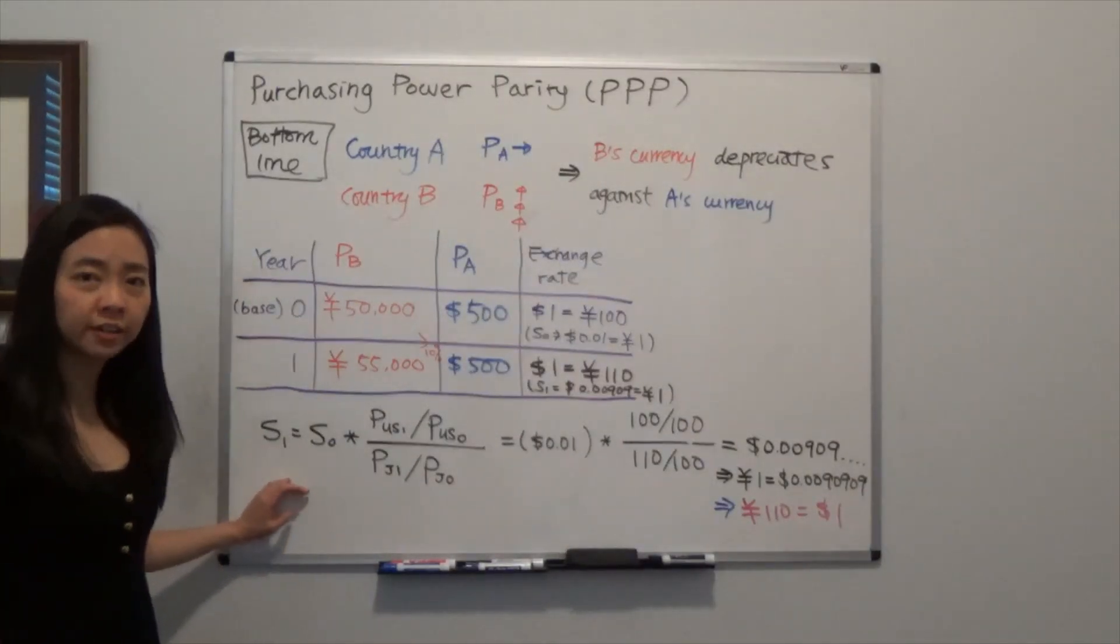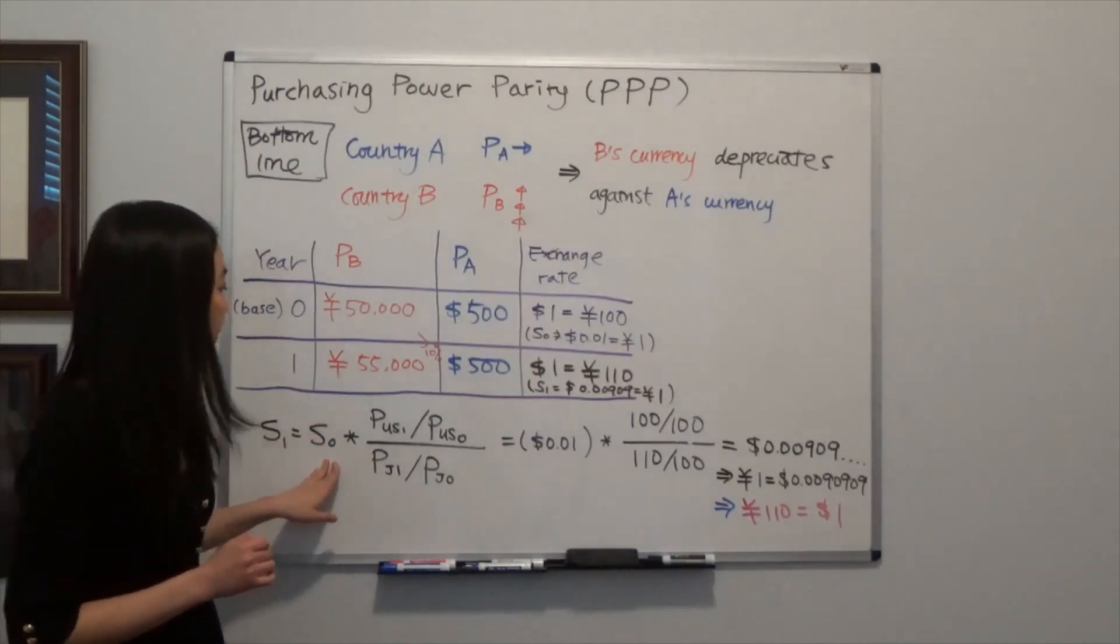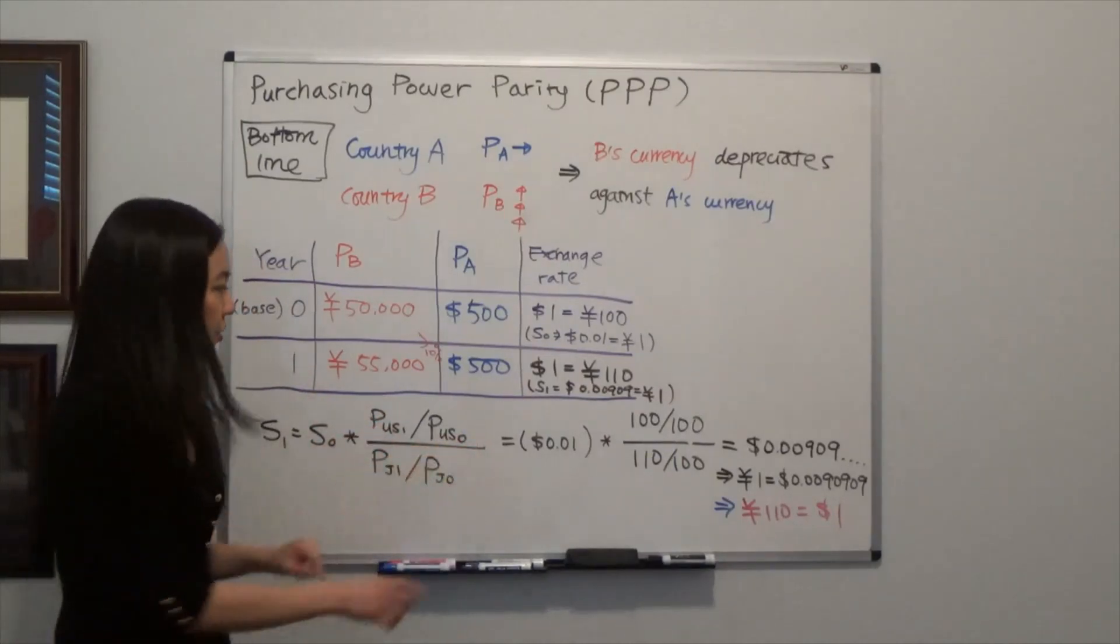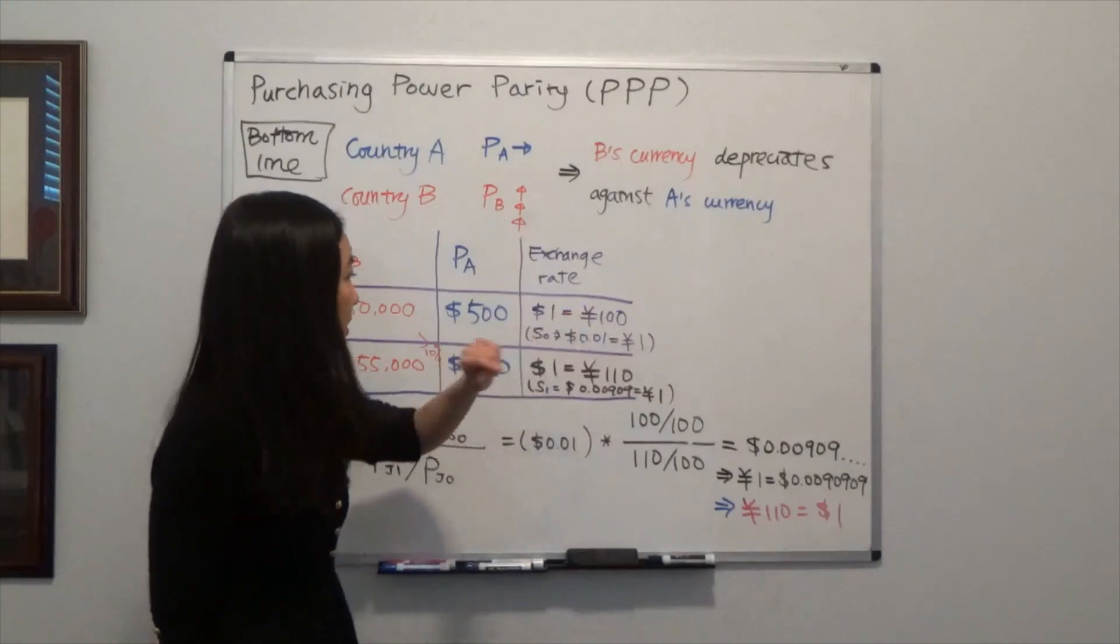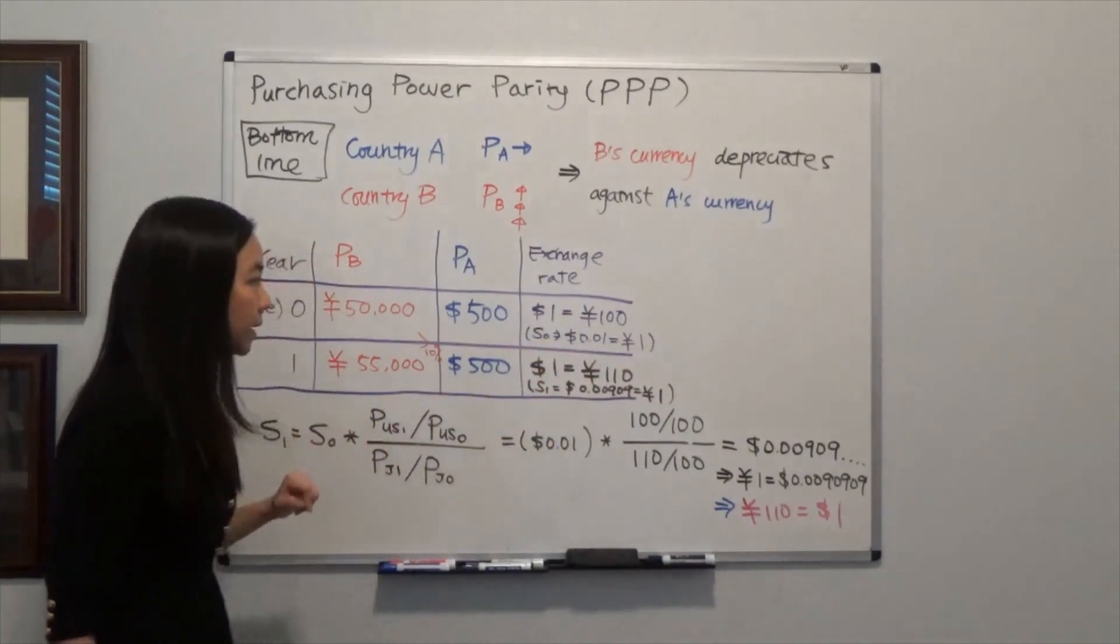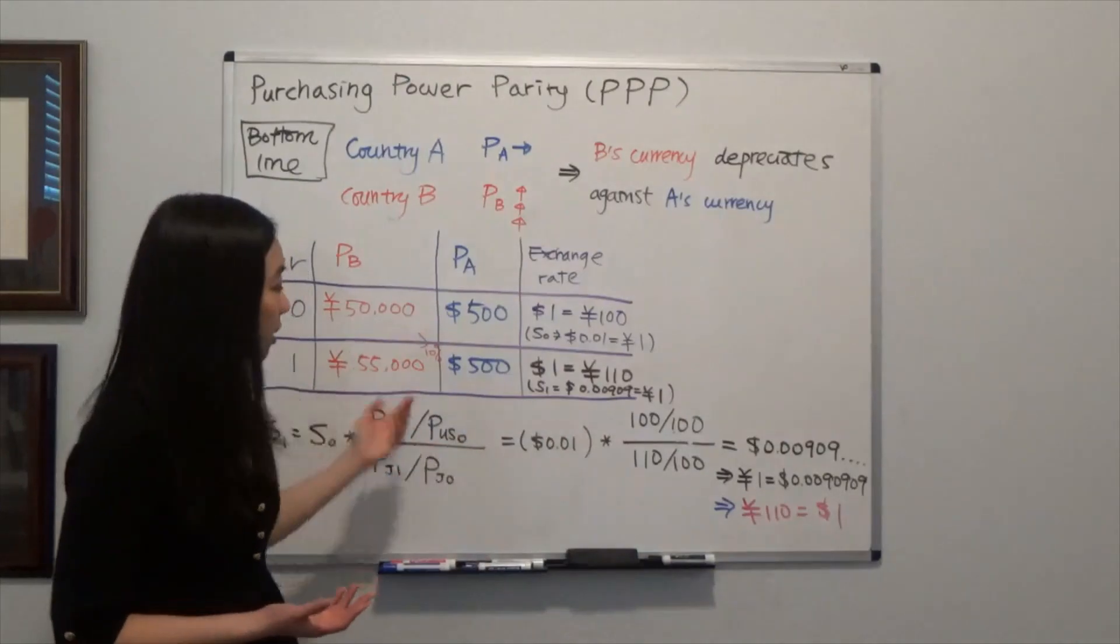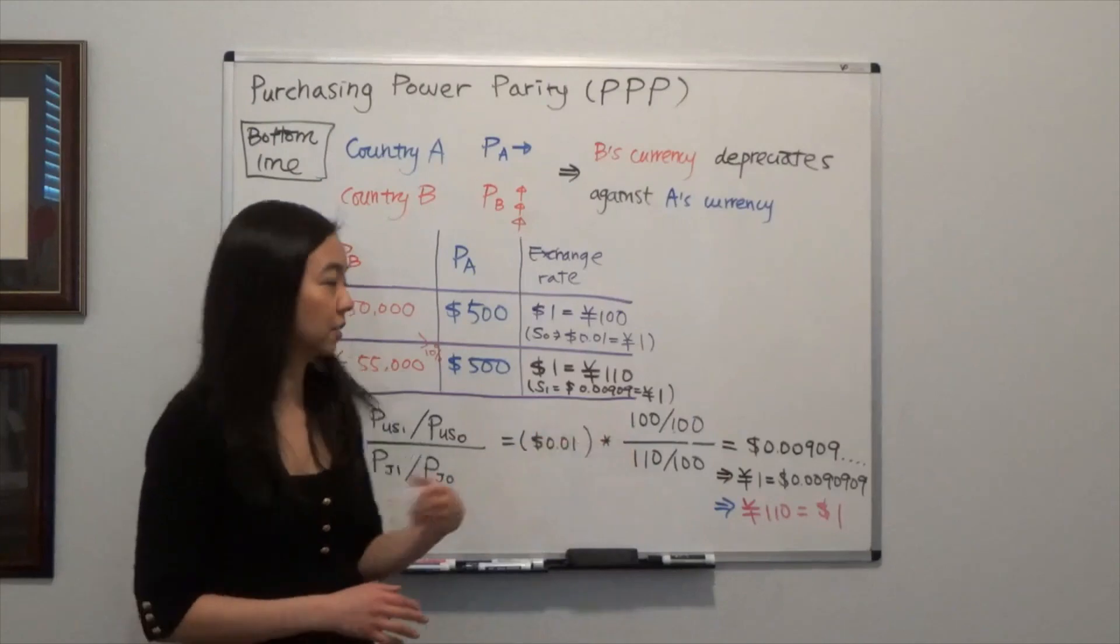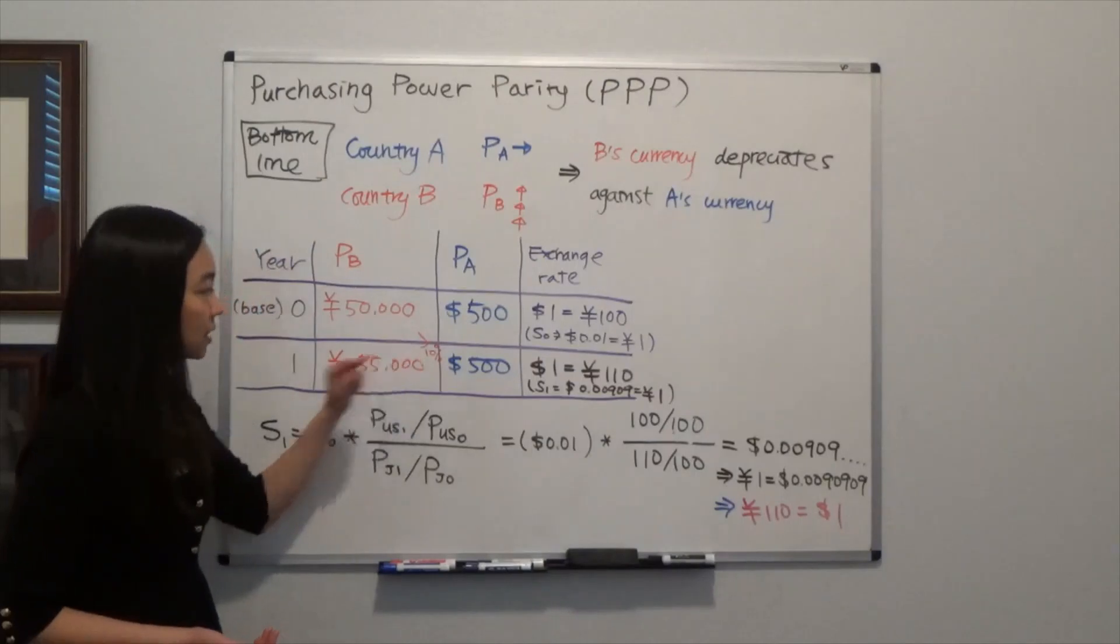And now we can find the target exchange rate of year 1 by using the exchange rate of year 0 as well as the price level in the US and in Japan in both year 1 and year 0. So here is our exchange rate in year 0. We know that the price of 1 Japanese Yen is equal to $0.01. Now the price level of US in both year 1 and year 0 was 100 because there is no inflation. So in the base year, we say the price is 100. Then in year 1, it's also 100 because there is no inflation rate.